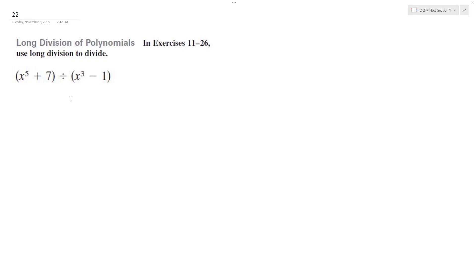Alright, so we want to solve the following problem. We're dividing x to the 5th plus 7 by x cubed minus 1. So, using placeholders, x cubed plus 0x squared plus 0x minus 1.